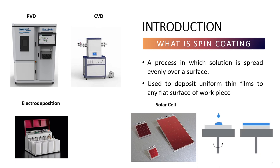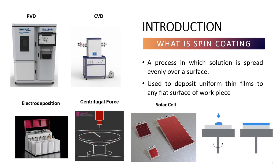The spin coater coats the surface by using a principle of centrifugal force to achieve uniform thin films. The substrate is rotated at a relatively high speed, around 300 to 5000 revolutions per minute. The thickness of the film depends on the nature of the polymer or solvent, spinning speed, and time. The spin coating method is easy to operate by controlling the speed corresponding to the desired film thickness.